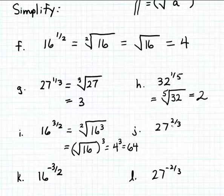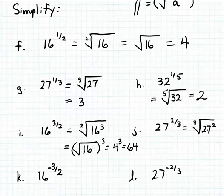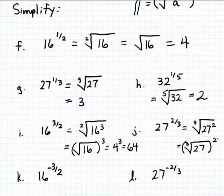Suppose we want to simplify 27 to the 2/3 power. Applying the rule for fractional exponents, the 3 indicates the index of the radical — so that's a cube root — and the 2 stays as an exponent. So 27 to the 2/3 power equals the cube root of 27 squared. Since the fractional exponent is in lowest terms, we can pull the 2 out from underneath the radical and write this as the cube root of 27, then square it. The cube root of 27 is 3, so we get 3 squared, which equals 9.